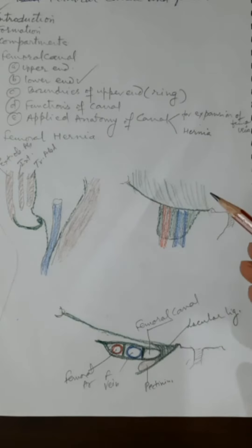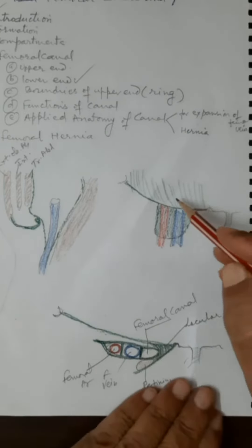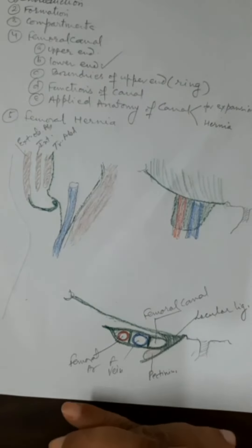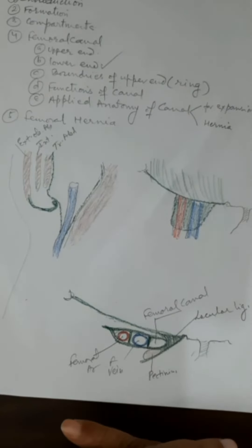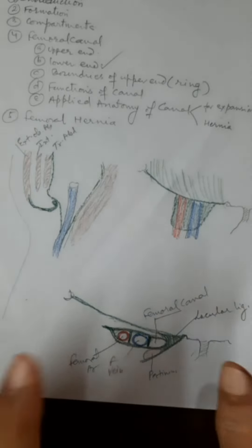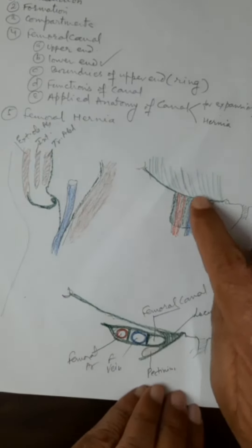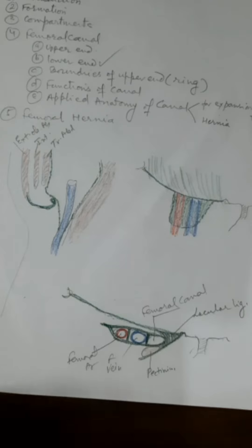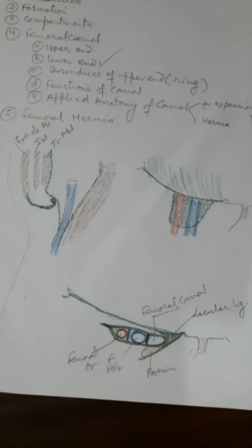The canal is an oval ring-shaped canal which is open at the top, and this opening is called the femoral ring. This ring is the potential site which opens into the abdomen, through which abdominal contents can enter the canal.